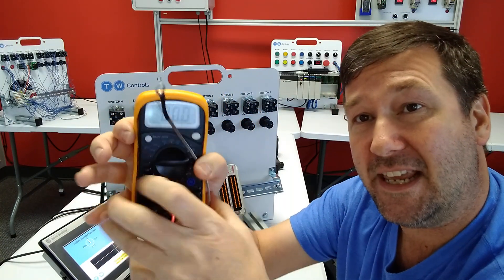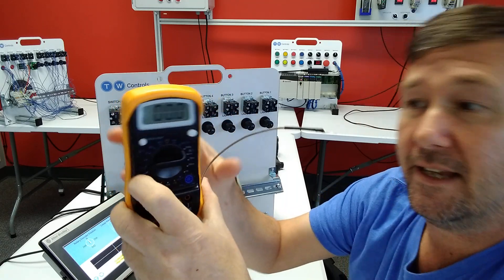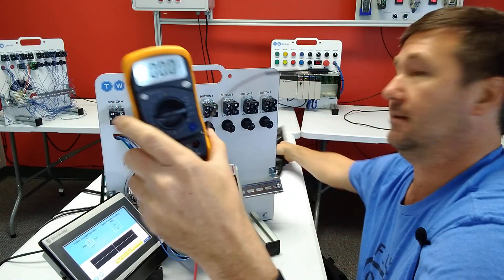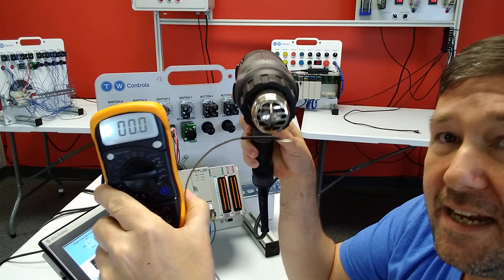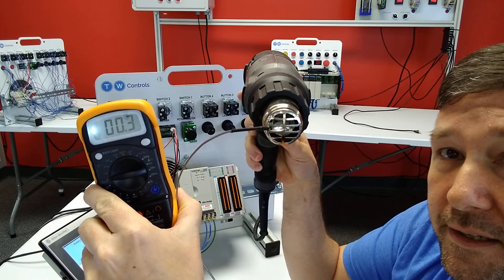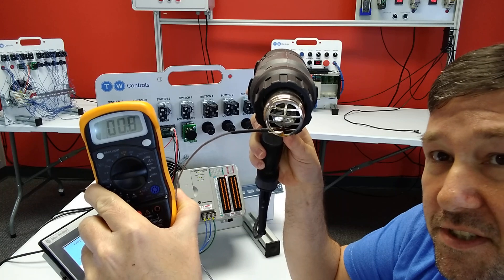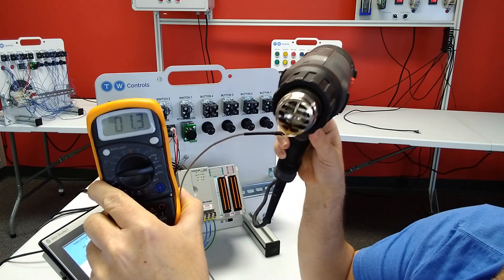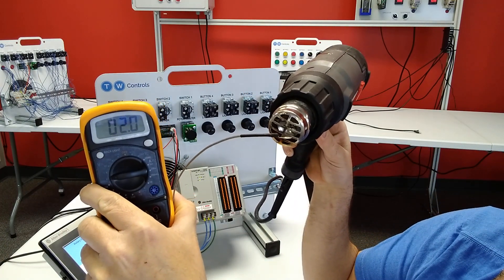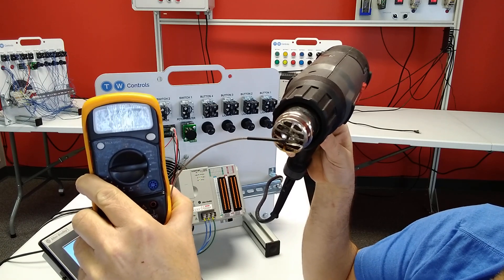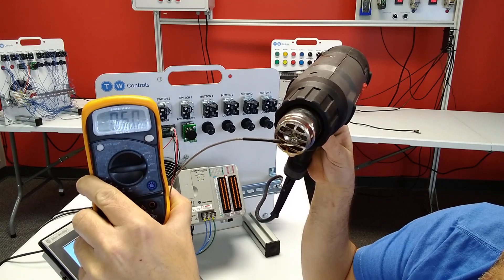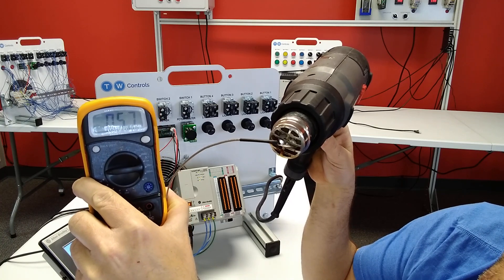But now let's take a heat gun and see what it does. So as I heat it up, you're going to see the voltage starts climbing on it. And now we're up to four millivolts, and we're steadily climbing.